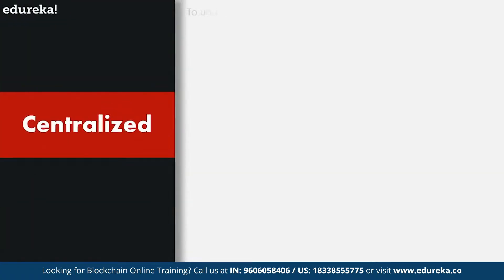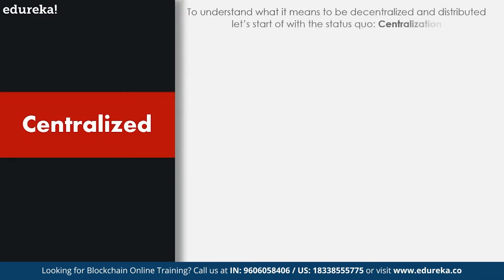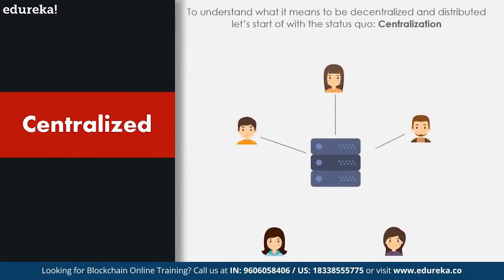The first technical terms we encounter are decentralized and distributed. To understand what it means to be decentralized and distributed, let's start with the status quo — that is, centralization. Any organization or network where decisions are made by a chosen group of people is a centralized system. Presently we are surrounded by a mass of centralized systems which we use every day.